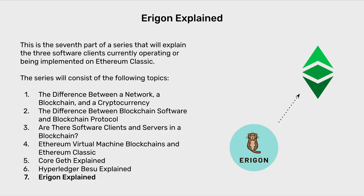The series consists of the following topics: one, the difference between a network, a blockchain and a cryptocurrency; two, the difference between blockchain software and blockchain protocol; three, are there software clients and servers in a blockchain; four, Ethereum Virtual Machine blockchains and Ethereum Classic; five, Core Geth Explained; six, Hyperledger Besu Explained; and seven, Eragon Explained. This last one is the current video, and the last three are the actual software client explanations.